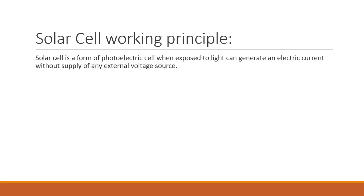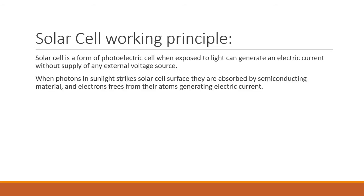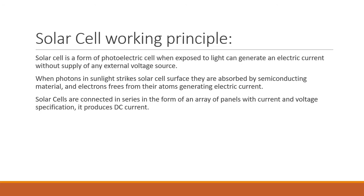Again, let me explain the working principle. When it is exposed to light, it can generate electric current without any supply of external voltage source. This is nothing but the photoelectric effect. When photons in sunlight strike solar cell surface, they are absorbed by semiconducting material and electrons freeze from their atoms generating electric current. Solar cells are connected in series in the form of an array of panels with current and voltage specification. It produces DC current.